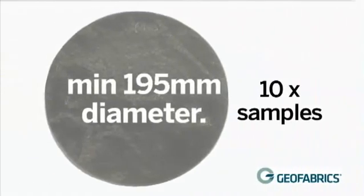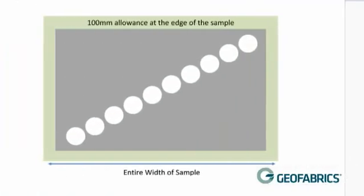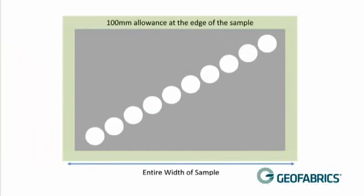Ten circular specimens are required with a minimum diameter of 195 millimetres. The specimens are sampled so that they are as widely spaced as possible over the whole surface of the sample, so that their positions are symmetrically different in the longitudinal and cross directions. One hundred millimetres from either edge, any visually non-representative, soiled or damaged part of the sample is discarded.